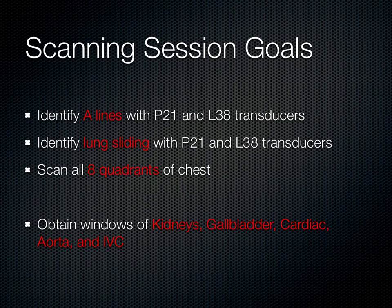When you practice the hands-on sessions for lung ultrasound, focus on finding A lines with both the linear and phased array probe, look for lung sliding with both probes, and look at all eight quadrants of the chest. Find out where the diaphragm is on patients — look at the mirror image artifact if you have a normal patient, or the fluid if you have a patient with fluid in the thoracic cavity. While you're in that area, also take a look at the relationship of the spleen, kidneys, gallbladder, and heart.